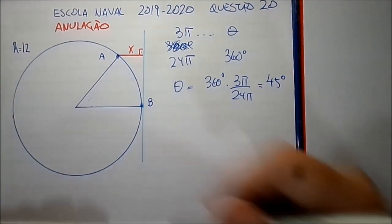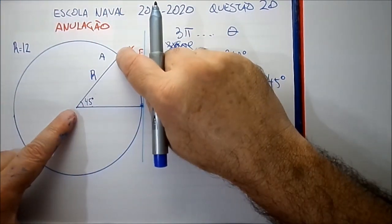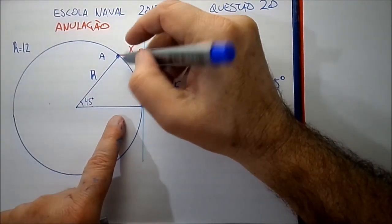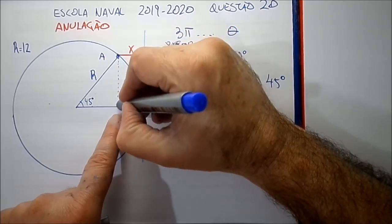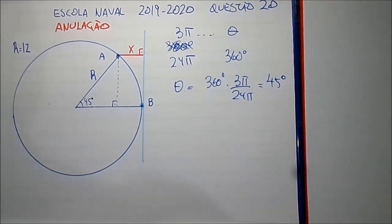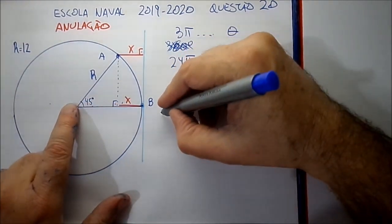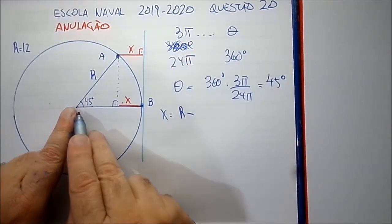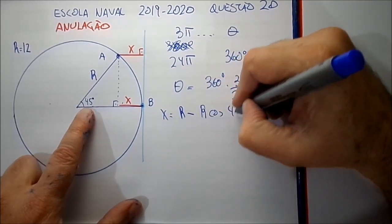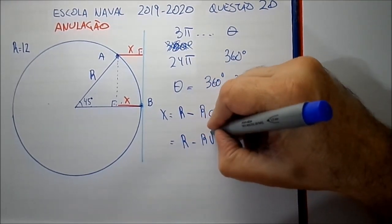Temos todas as medidas da figura: esse ângulo aqui é 45 graus, e essa medida aqui é R. Vou fazer com R e substituir por 12 no final. Se você formar esse triângulo retângulo isósceles, com a perpendicular baixada, a medida X aparece repetida. X pode ser calculado assim: é R menos R cosseno de 45, que fica R menos R raiz de 2 sobre 2.